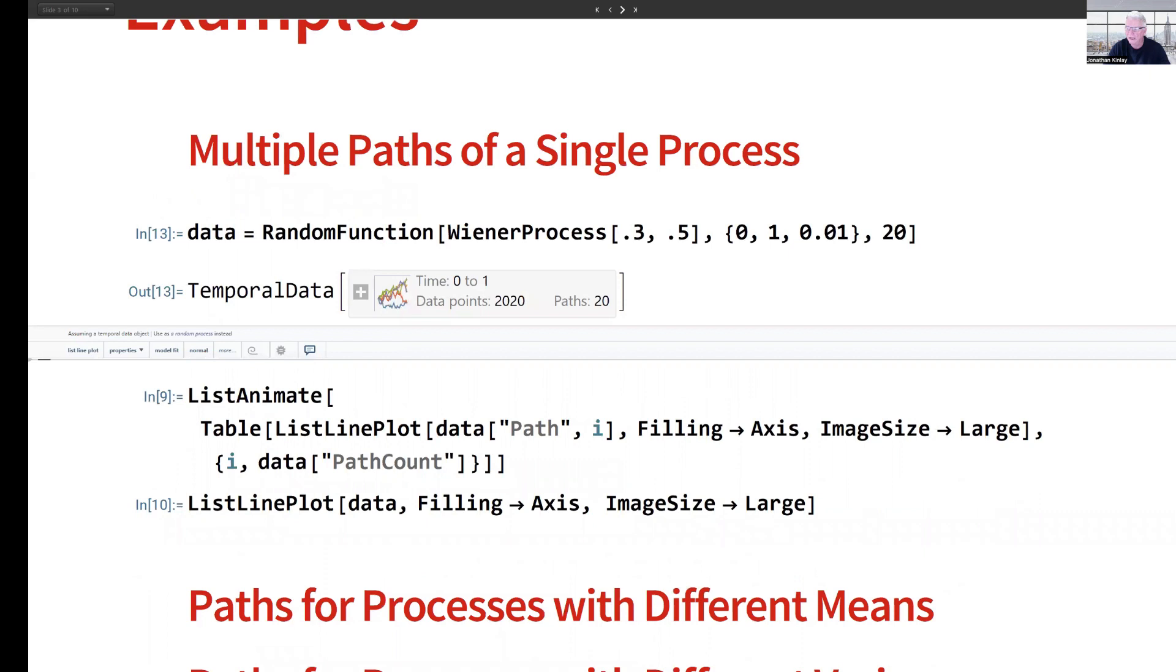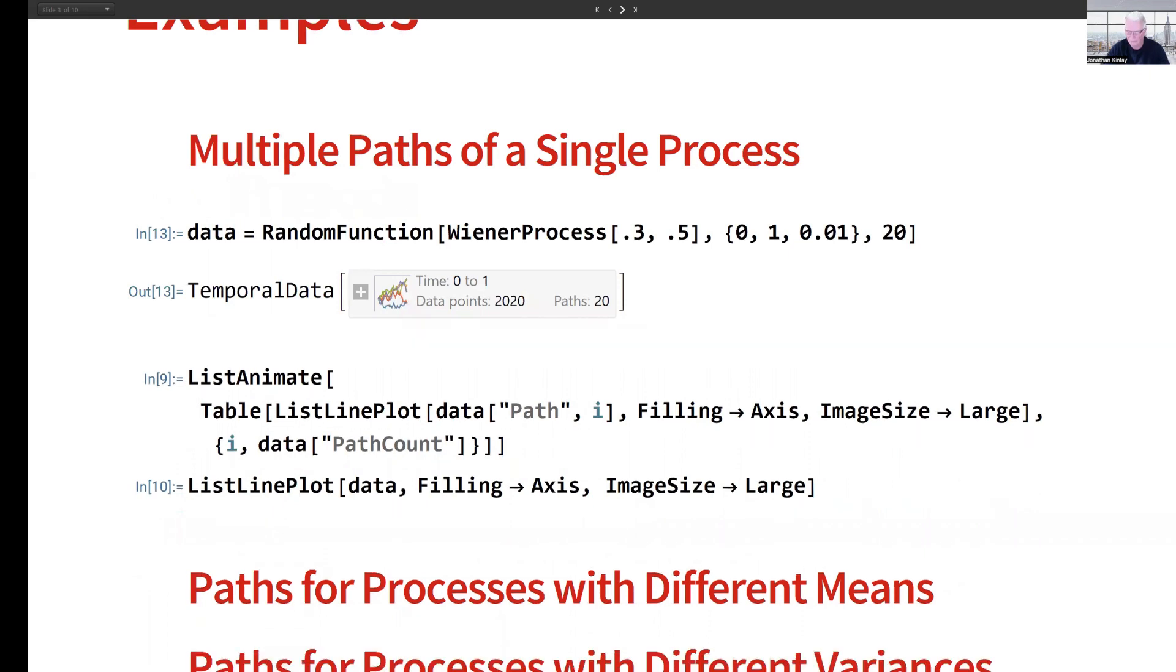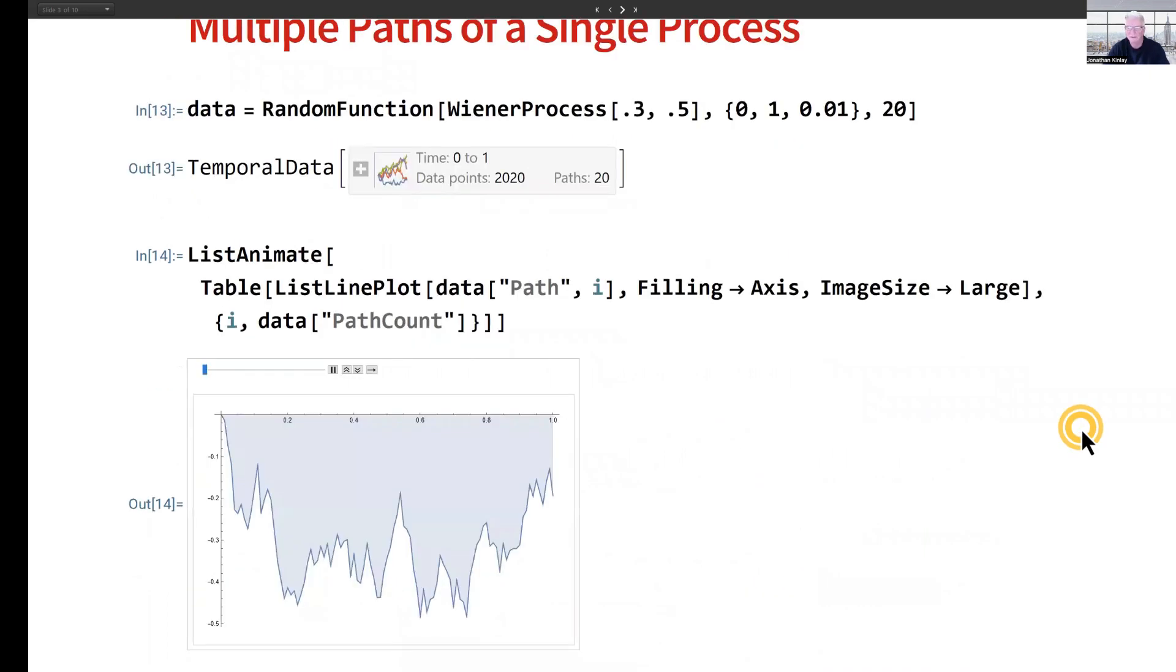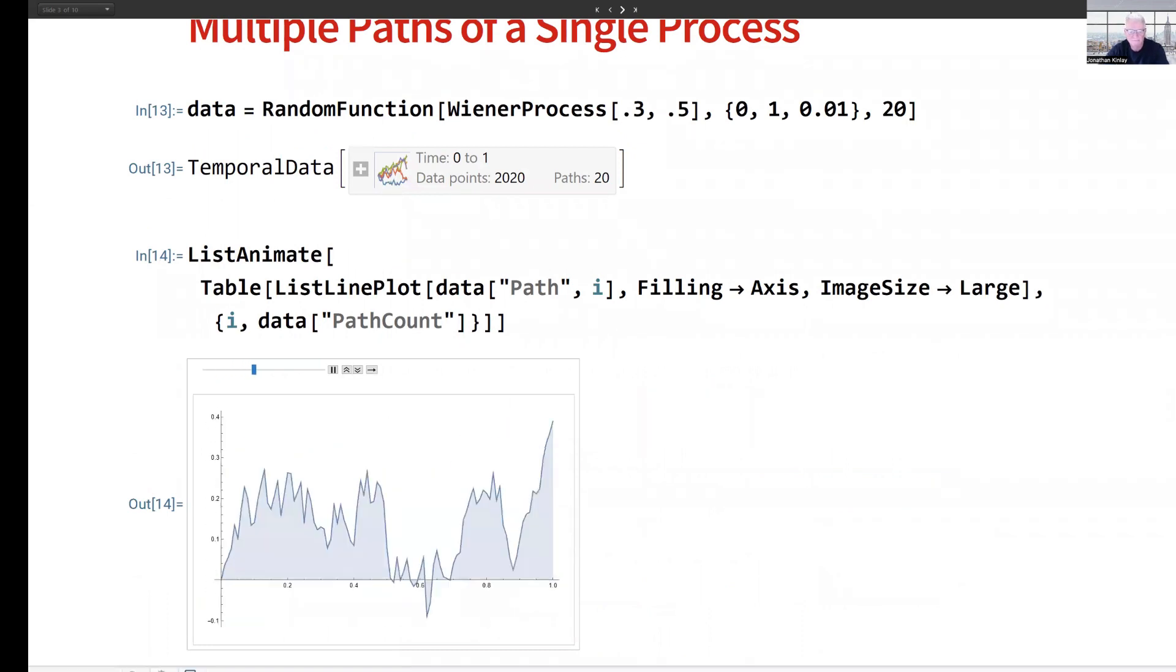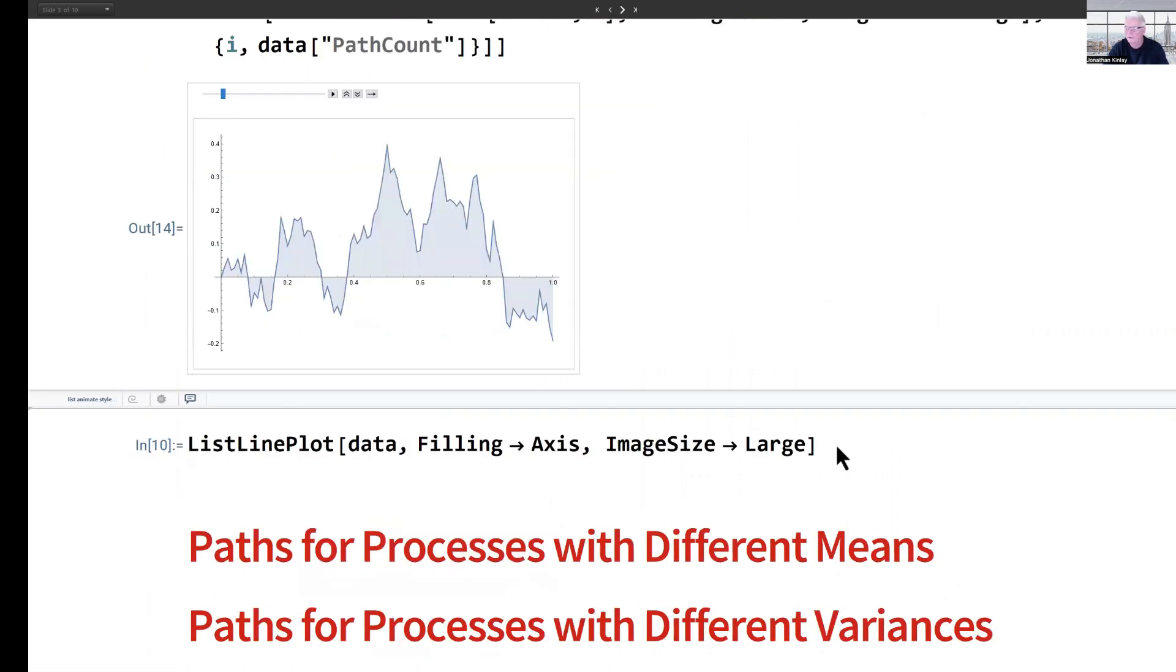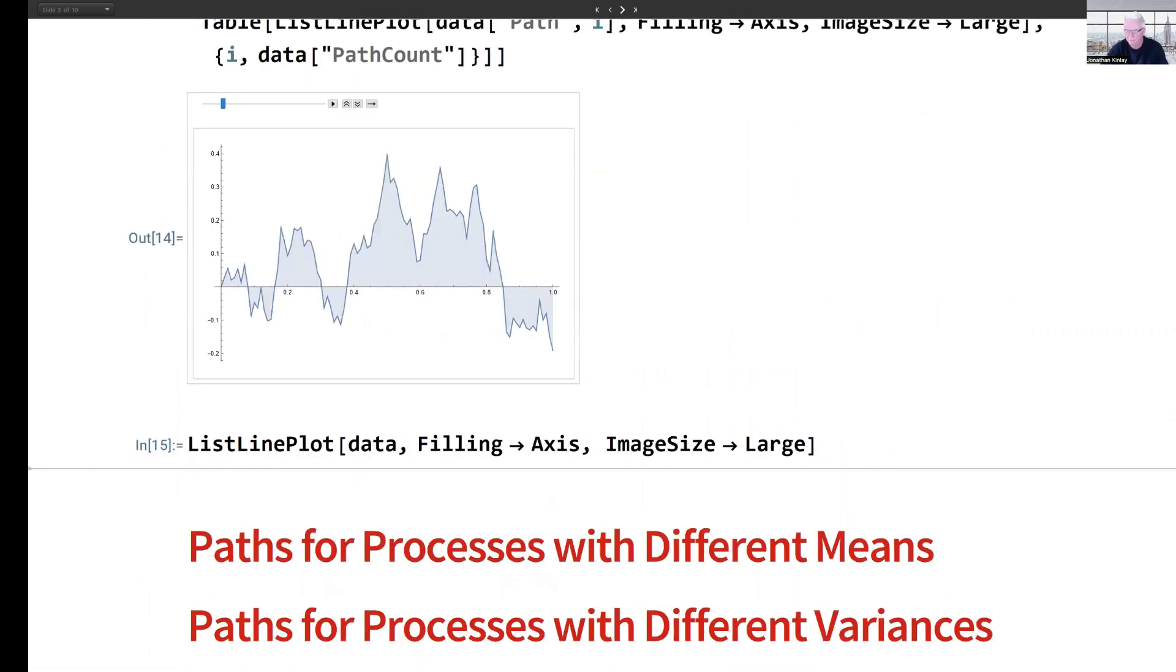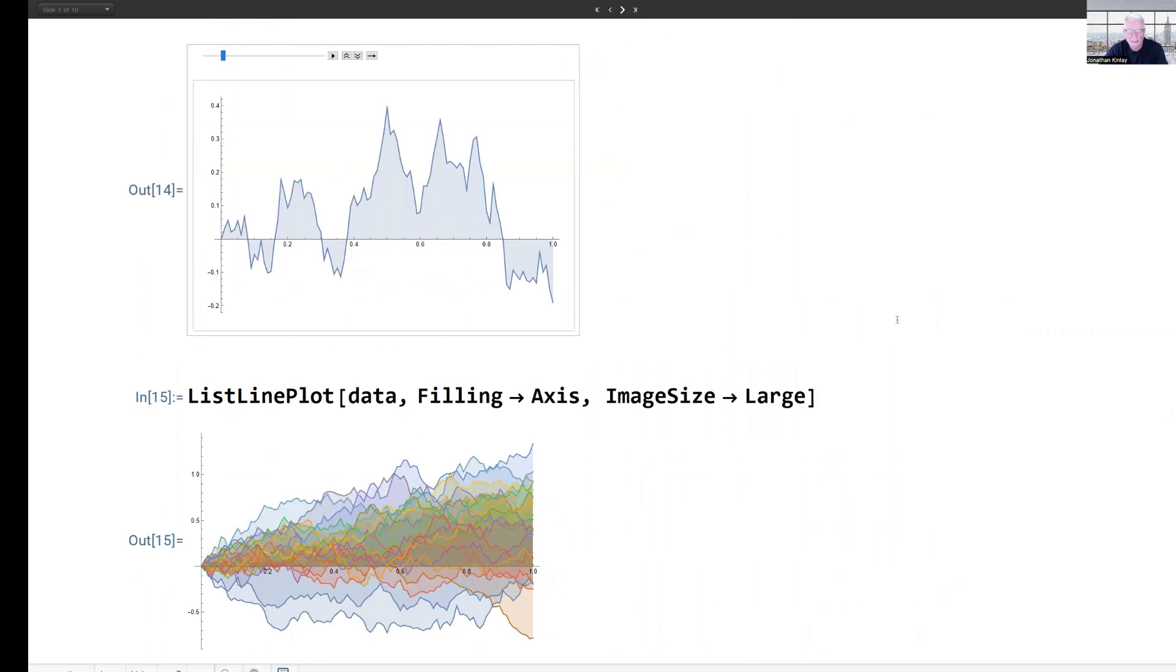Let's take a look at the various sample paths that have evolved from the process. We can see them here. If we want to look at them all on the same chart, this shows fairly clearly the upward drift in the process for the majority of the sample paths.